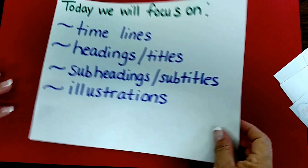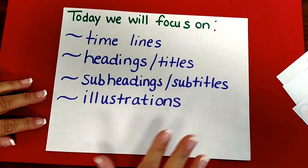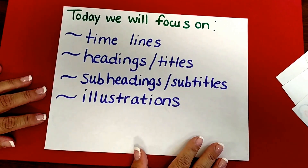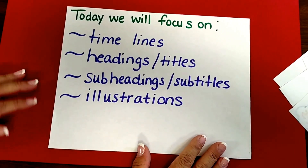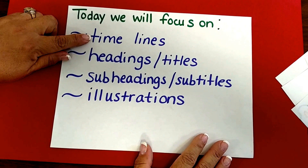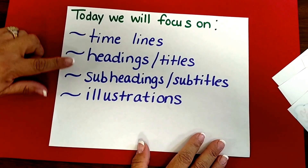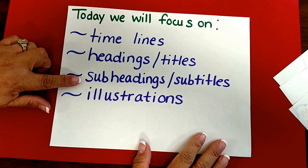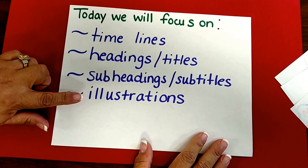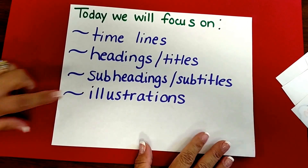Today we're going to focus on just four key text features: timelines, headings and titles, subheadings or subtitles, and illustrations.